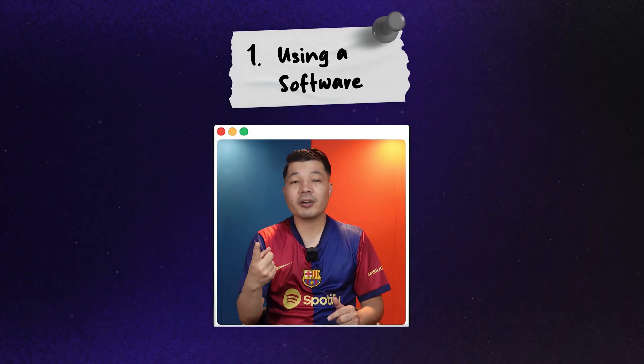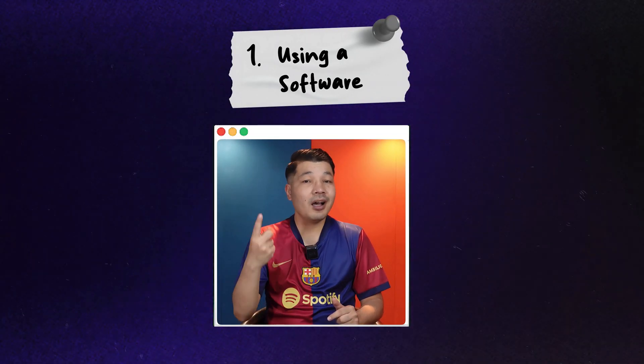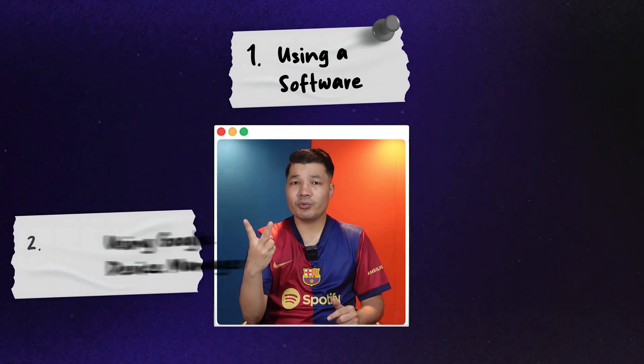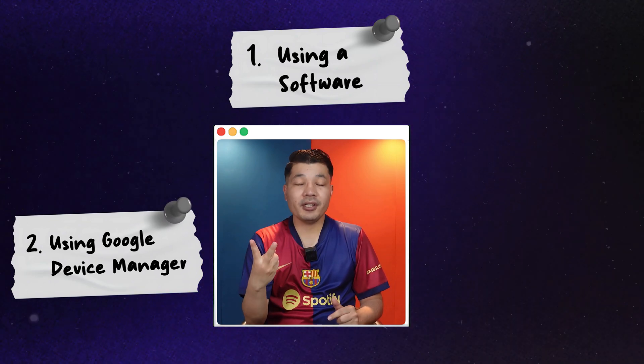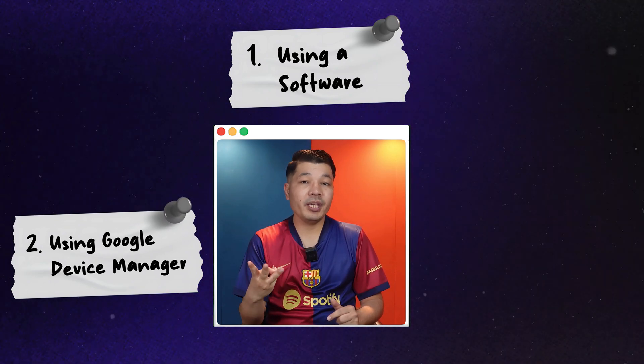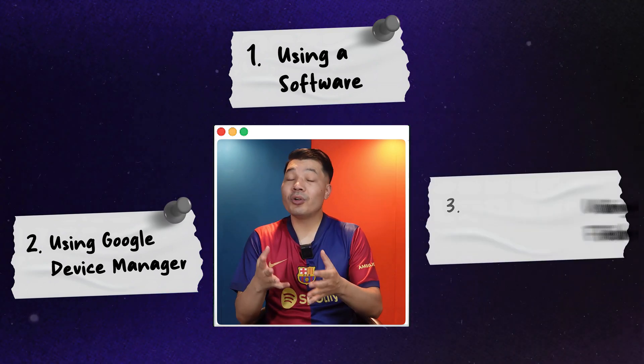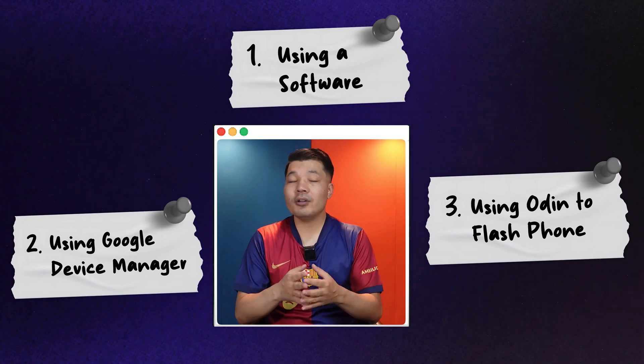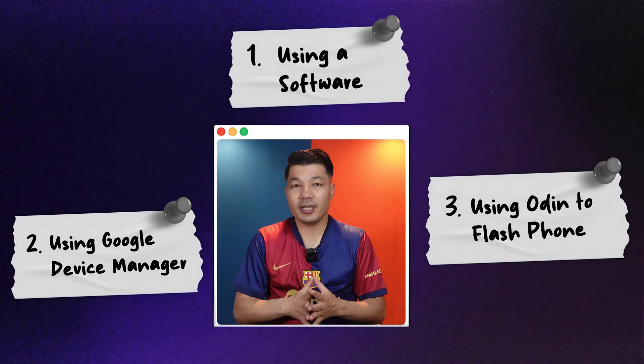Before starting, here are the methods I'm going to cover. Our first method will be using software to unlock an Android phone. Our second method will be using Google Device Manager. And our third and last method will be using Odin to flash an Android phone in order to remove the lock screen. So let's start with our first method.